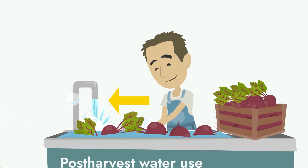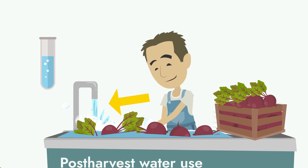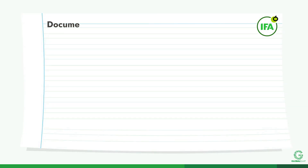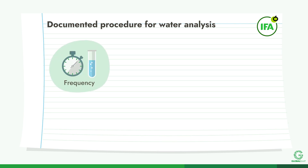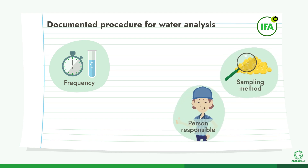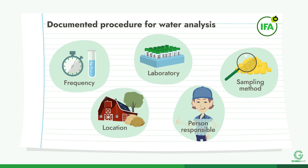Samples for analysis must be taken as close as possible to the point of application. For fruit and vegetables, a documented procedure for water analysis must be prepared. The procedure shall include the frequency of sampling, the person responsible for sampling, the method of sample collection, the laboratory analyzing the samples, and the sampled location.